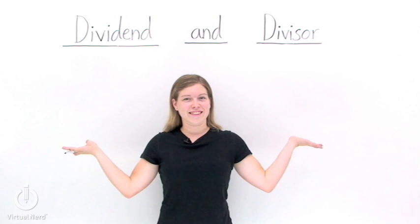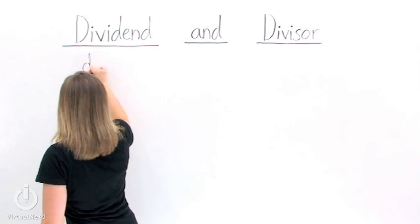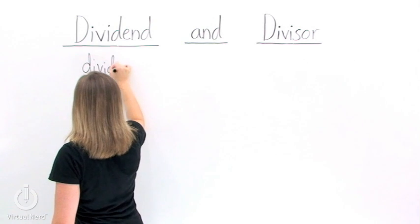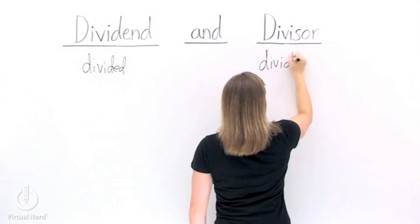What's a dividend, what's a divisor, and what's the difference? When we're dividing something, the dividend is the number that is being divided. On the other hand, the divisor is the number that is being divided by.